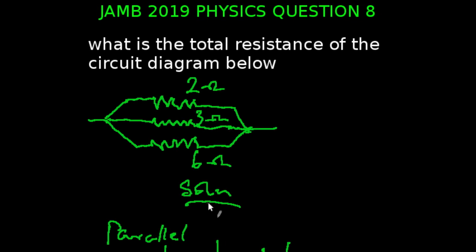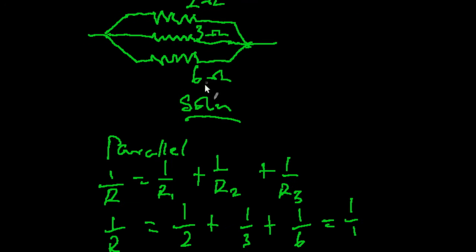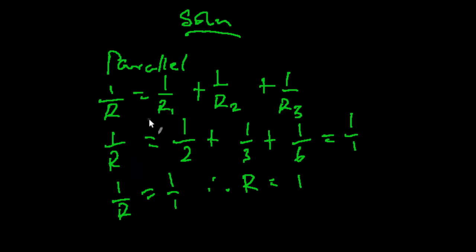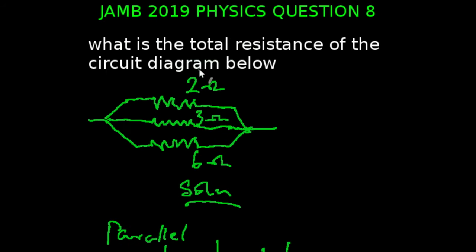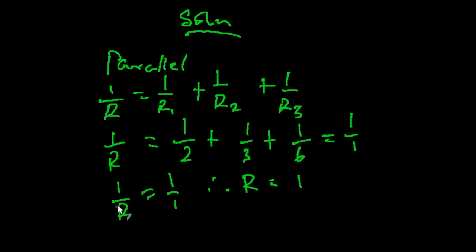Question 8 of the JAM 2019 physics examination. What is the total resistance of the circuit diagram below? This is a connection in parallel. So, we are going to be using the formula 1 over R is equal to 1 over R1 plus 1 over R2 plus 1 over R3. Our 1 over R will be equal to 1 over 2 plus 1 over 3 plus 1 over 6. You can get those values from here: 2, 3, 6. So, that is going to give us 1 over 1. So, our 1 over R is equal to 1 over 1. Therefore, our R is equal to 1.